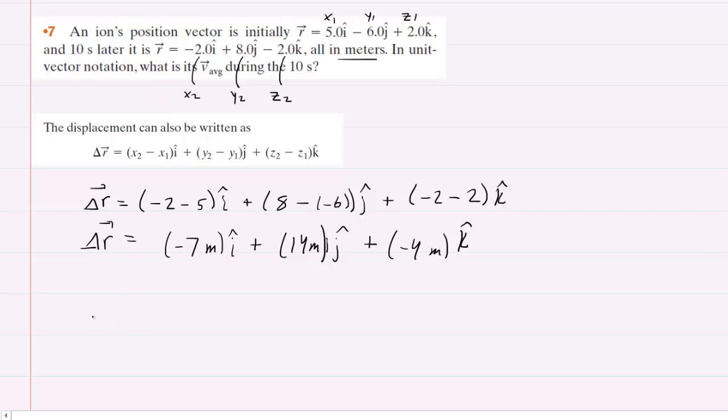Because average velocity is equal to the displacement vector divided by the time interval. This question notes that the time interval is 10 seconds.